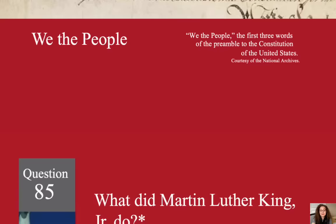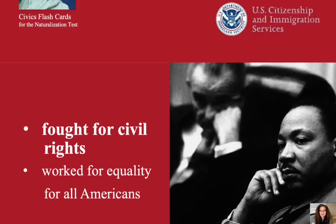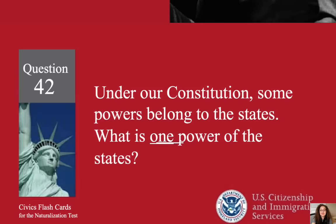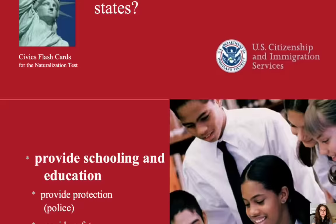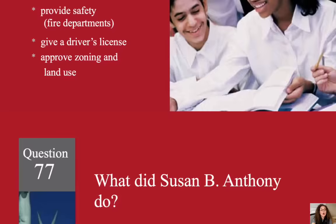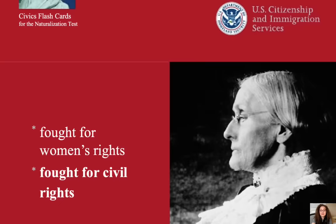What did Martin Luther King Jr. do? Fought for civil rights. Under our Constitution, some powers belong to the states. What is one power of the states? To provide schooling and education. What did Susan B. Anthony do? She fought for civil rights.